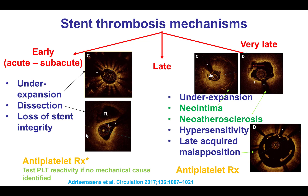Treating a patient with stent thrombosis is best done when we understand the mechanism. Mechanisms for early stent thrombosis are often stent under-expansion, edge dissection, or loss of stent integrity, whereas for late and very late they involve stent under-expansion but also neo-intima, neo-atherosclerosis, late acquired malapposition, and in rare cases, hypersensitivity reactions.